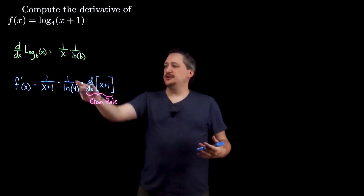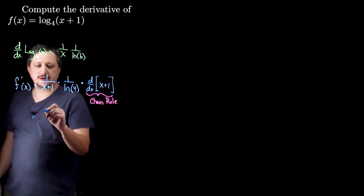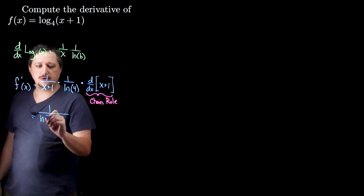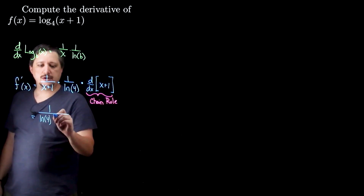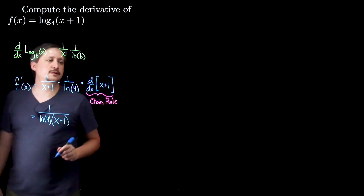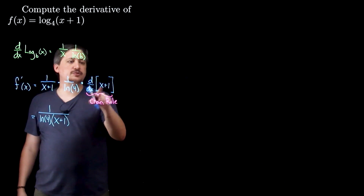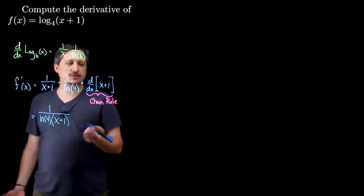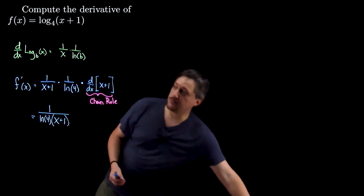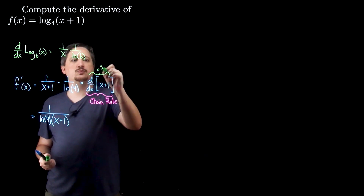Regardless, I'm going to move that in front and then compute this derivative. In particular, I'm going to get 1 over natural log of 4 times x plus 1. The derivative of x plus 1 — well, the derivative of x is 1, derivative of 1 is 0. So this actually equals 1.